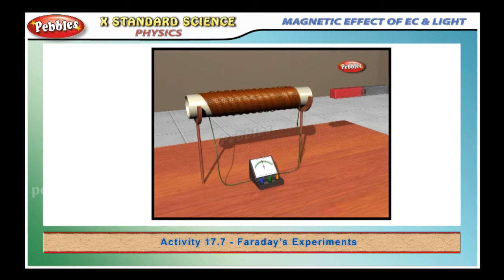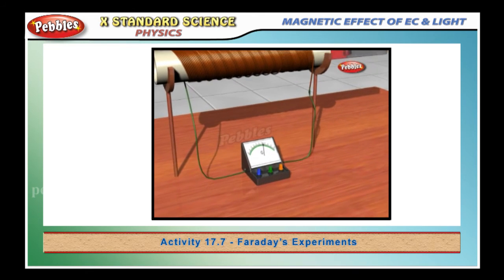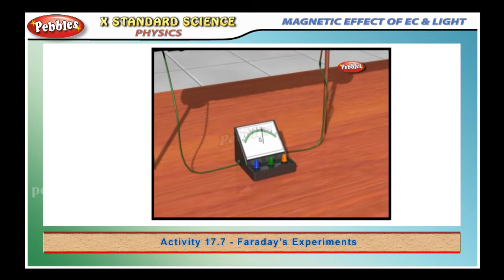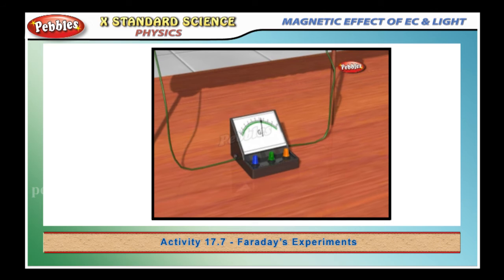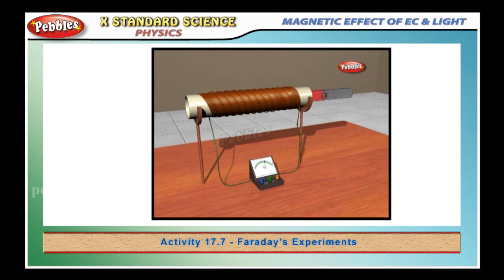Place the magnet stationary at a point near the coil, keeping its north pole toward end B of the coil — we see the galvanometer needle deflects toward the right side. When the coil is moved toward the north pole of the magnet, similarly the needle moves toward the left when the coil is moved away.